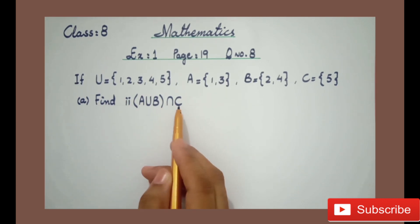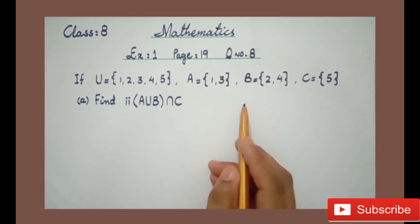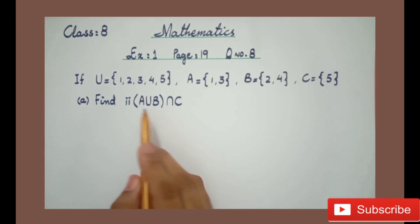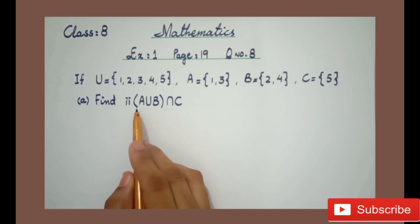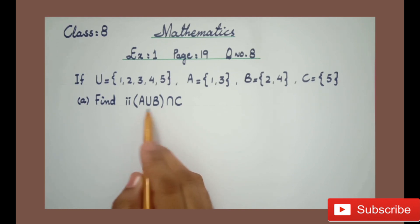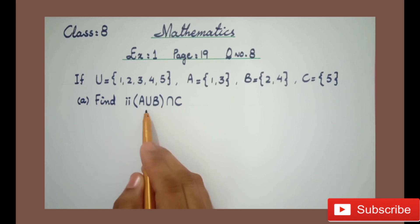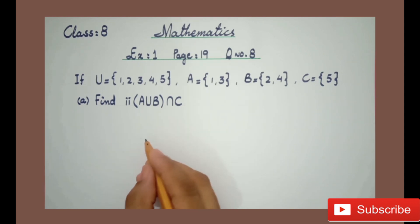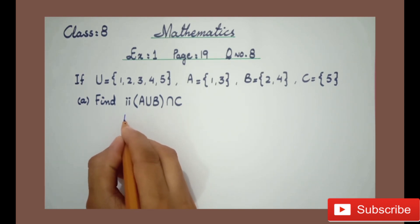The second part of this question is A union B, intersection C. According to the mathematics rule, we will solve the bracket first. Means we will find out A union B first.